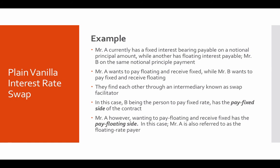Let's look at a plain vanilla interest rate swap example. Mr. A currently has a fixed interest payable on a notional principal amount, while Mr. B has a floating interest payable on the same notional principal. Notional means something which replaces what is real — it is like a placeholder. It does not have any real value but is treated as real so that a transaction can be conducted accordingly.